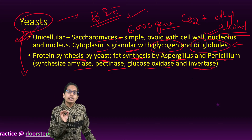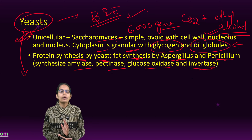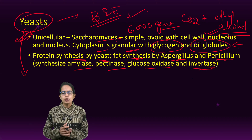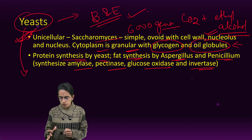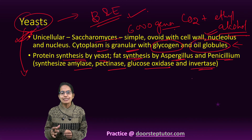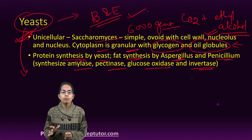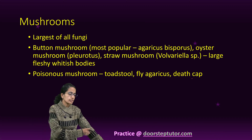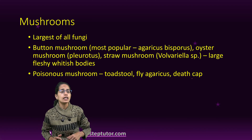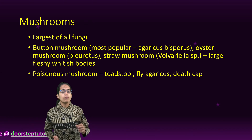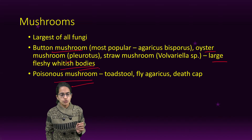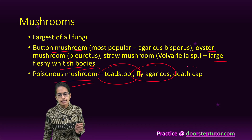Fungi are also responsible for tropical deterioration. In tropical and subtropical regions, due to the damp atmosphere, there is growth of fungi on clothing, leather material, and photographic plates, leading to spoilage — this is called tropical deterioration. The next is mushrooms. Mushrooms are the largest of all fungi. Three common mushrooms are button mushroom, oyster mushroom, and large fleshy whitish bodies. Poisonous mushrooms include toadstool, fly agaric, and death cap.